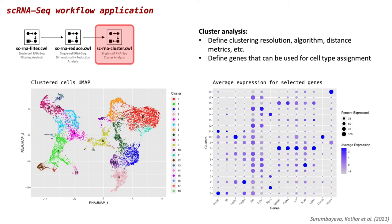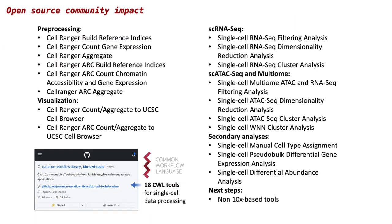The results of this step can be used for differential expression or differential composition analysis, which are not covered in this talk. To sum up, I would like to mention that I briefly discussed only 3 out of 18 available tools. I'm planning to extend this list with other tools to provide alternatives to CellRanger, as well as to cover several other types of multi-omics analysis. In the end, all of the developed tools will be contributed to the BIOCWL tools repository.